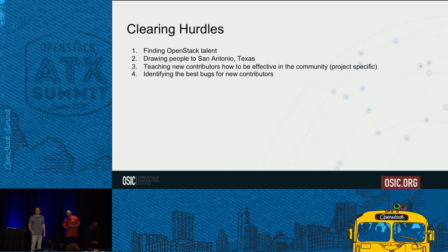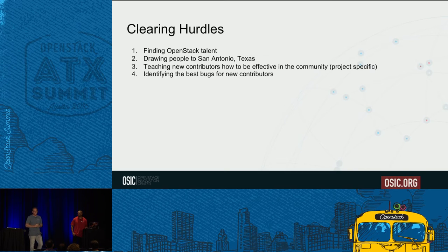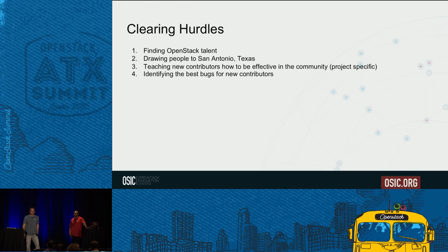We had some challenges. Finding OpenStack talent — very hard to find. And you couple that with trying to get them to move to San Antonio. Teaching new contributors how to be effective in the community is very project-specific. There isn't a 'here's the formula, now go into Neutron' — it's very project specific, and those projects tend to have their own ways of doing things. So we relied on coaches to help through that, but throwing a newbie into a project wasn't always appreciated. And then identifying the best bugs — where do we start? What are the best bugs, the right feature, the right thing to start on? Those were hard things to identify for new folks.